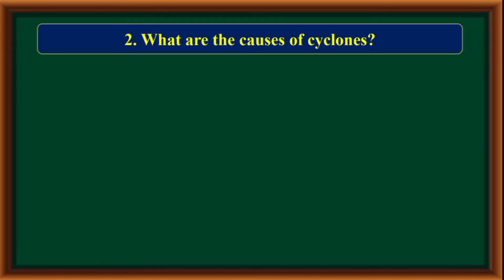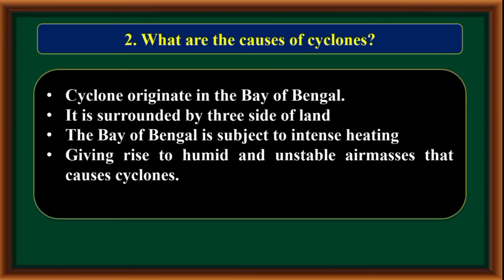What are the causes of cyclones? Cyclones originate in the Bay of Bengal. It is surrounded by three sides of land. The Bay of Bengal is subject to intense heating. It gives rise to humid and unstable air masses that cause cyclones.